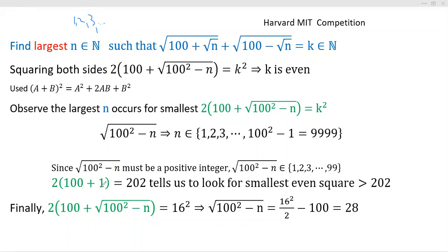If we were looking for the smallest n, we would actually take 99 and put it there. But we're looking for the largest, so they're acting in opposite directions. That's where this comes from. Now we're looking for the smallest even square greater than 202.